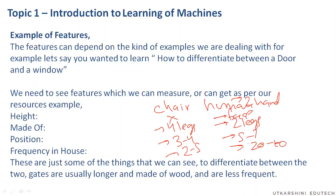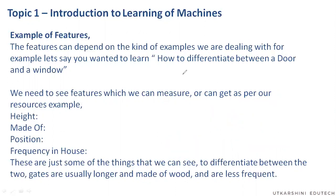The computer actually learns these numbers — the four legs, the three or two feet — because it can only understand numbers. So any feature that we try to identify should help differentiate between objects. For example, how can it help me differentiate between a door and a window? I'll see that the height for a window will be less.